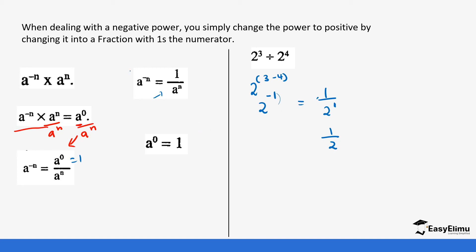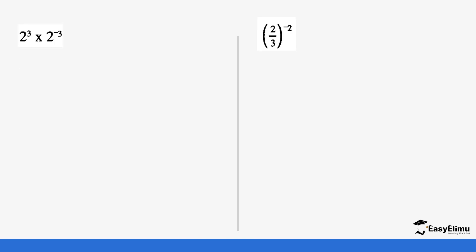So a power negative n is one over a power n. This is the rule that comes into our calculations. Let's do a few more questions.